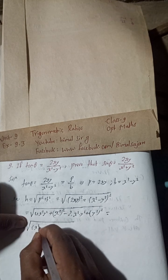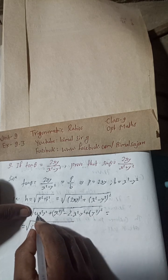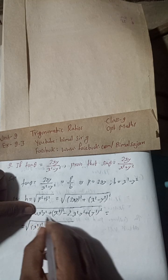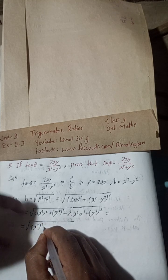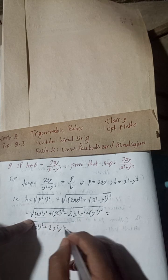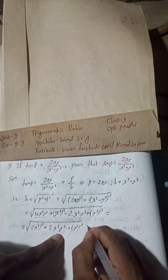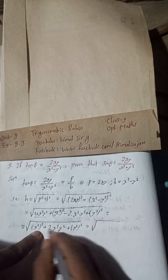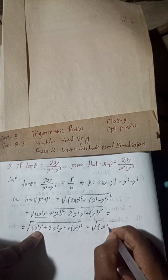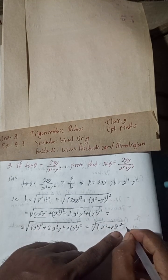Simplifying: 4x²y² - 2x²y² = 2x²y², so we get x⁴ + 2x²y² + y⁴. This is the formula a² + 2ab + b², which equals (x² + y²)². Therefore H = √(x² + y²)² = x² + y².